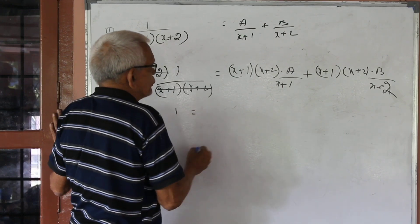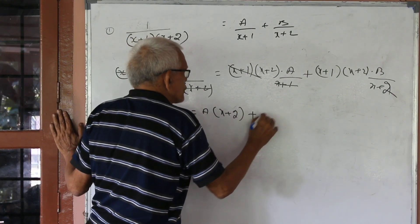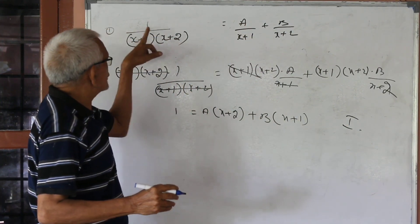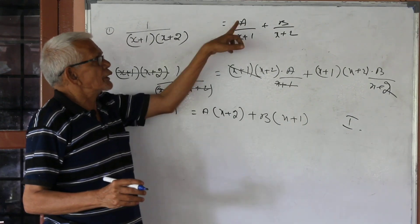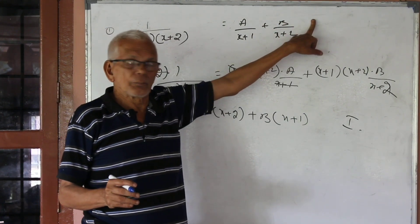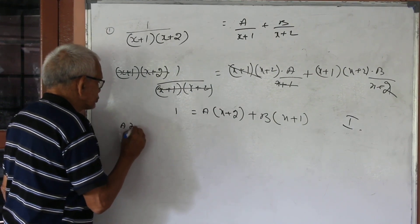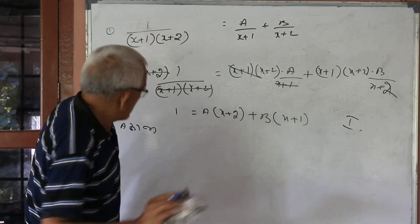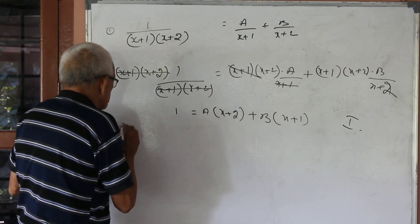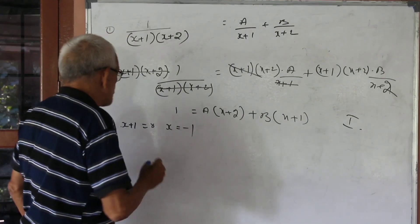1 equal to A into (x+2) plus B into (x+1). To get A, put x plus 1 equal to zero, so x equal to minus 1.